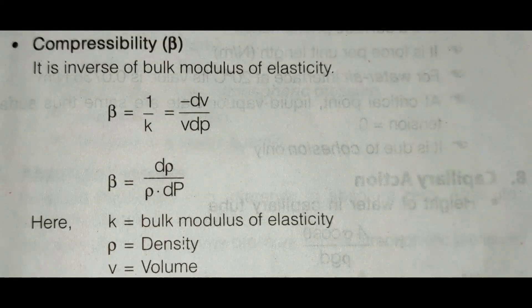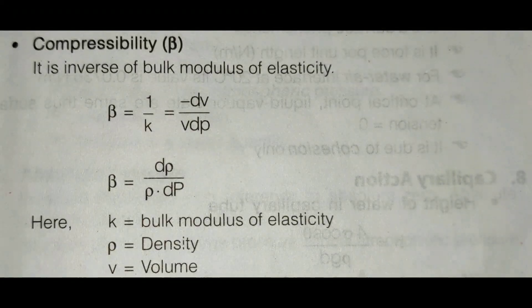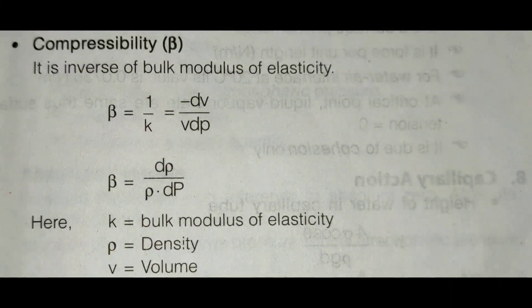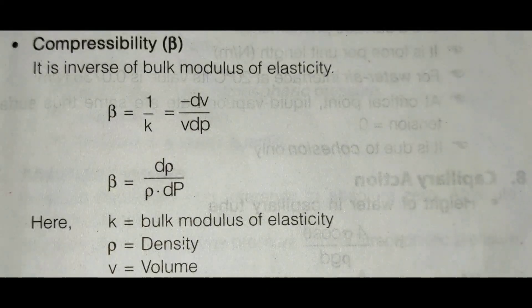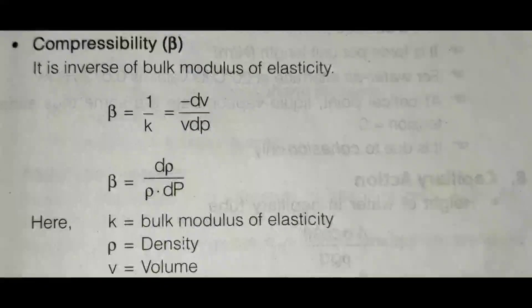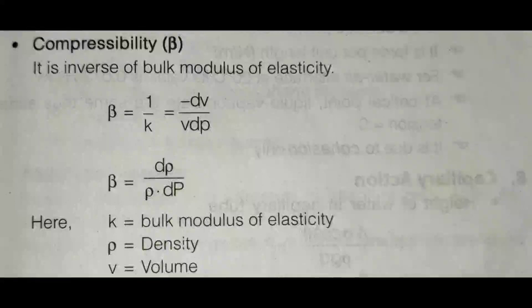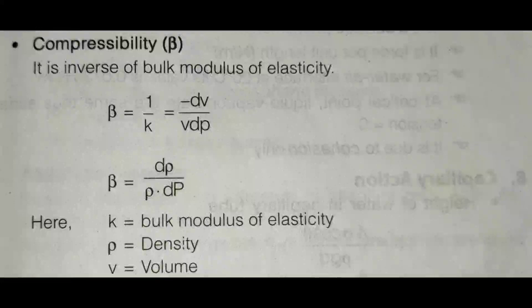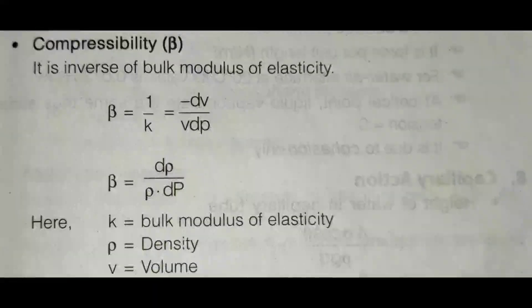Compressibility can be denoted as beta. It is the reciprocal of the bulk modulus of elasticity K. Compressibility beta equals 1/K, which equals minus dV divided by V times dP. Also, K equals rho times dP over d-rho. Here, K is the bulk modulus of elasticity, rho is density, and V is volume.